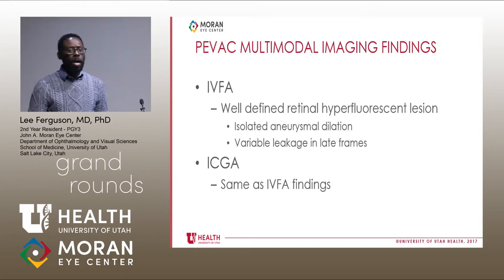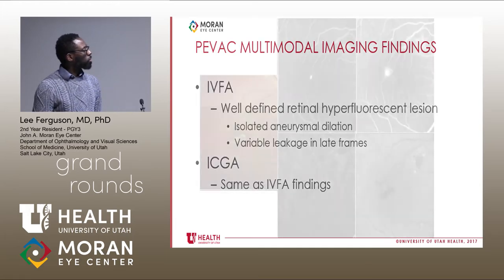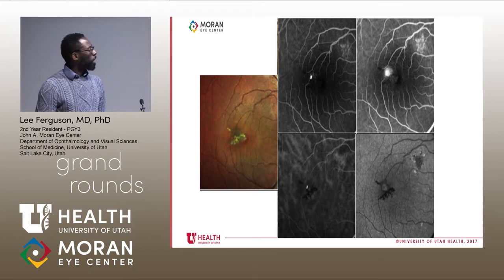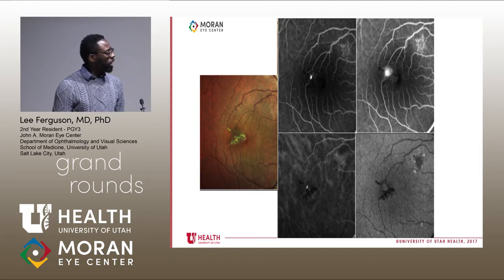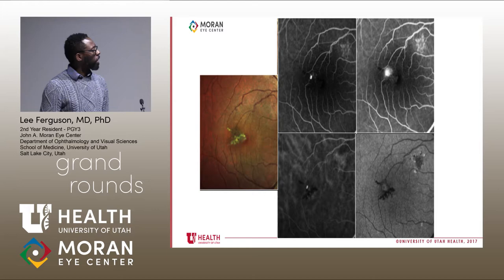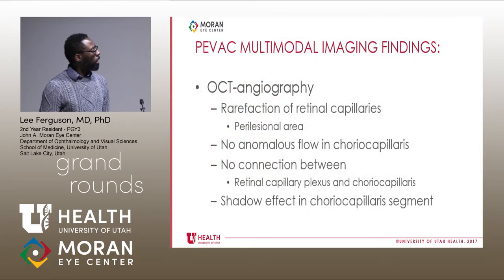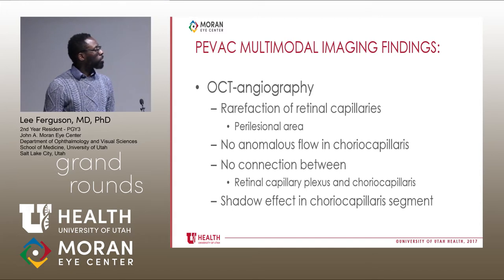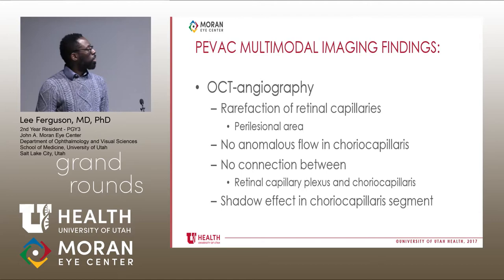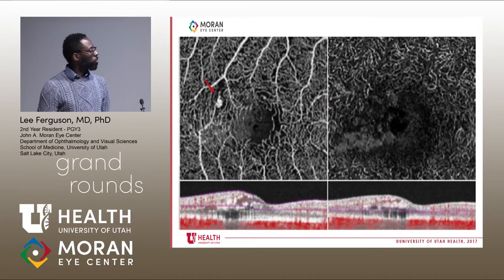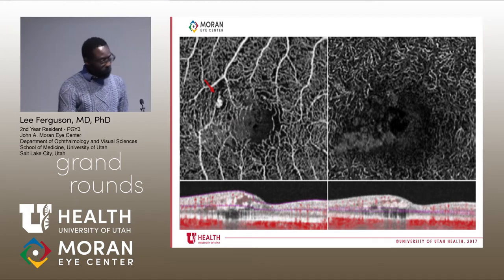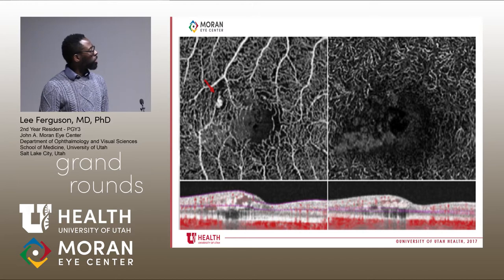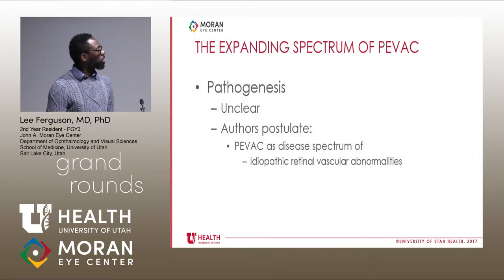In terms of their ICG and IVFA, they showed well-defined retinal hypofluorescent lesions with variable leakage in late frames, with no other significant findings on imaging. With OCT angiography, they found rarefaction of retinal capillaries around the lesion, with no connectivity between the retinal capillary plexus and the choriocapillaris — this rarefaction of the surrounding capillary bed is a key finding.